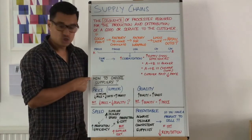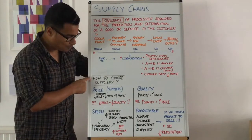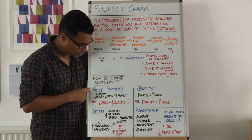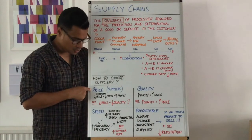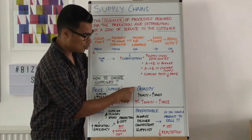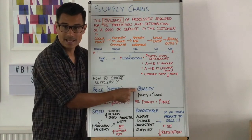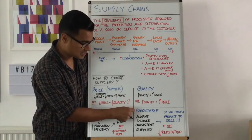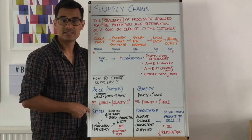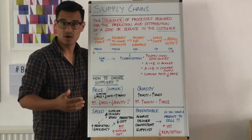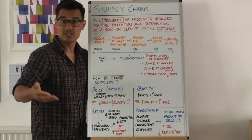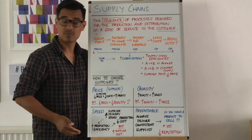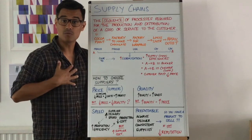So how do you choose your suppliers? It's going to be one of these four things: the price the supplier charges, the quality that the supplier will give you, and the predictability and speed that the suppliers can deliver the components or raw materials that you, as a business, will get from them.